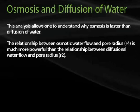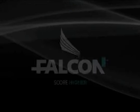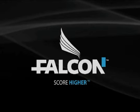This analysis allows one to understand why osmosis is faster than diffusion of water. The relationship between osmotic water flow and pore radius, r to the fourth power, is much more powerful than the relationship between diffusional water flow and pore radius, r to the second power.